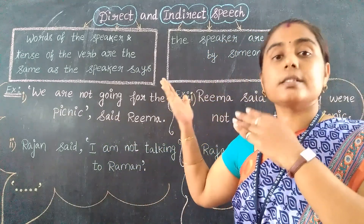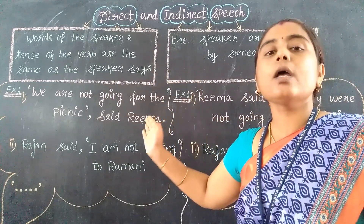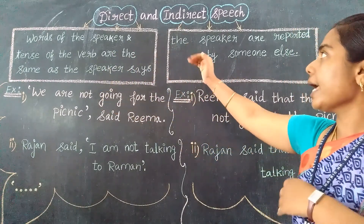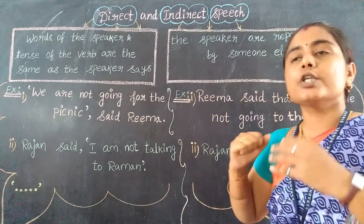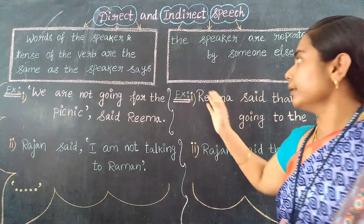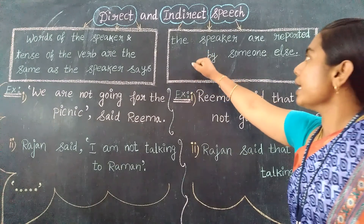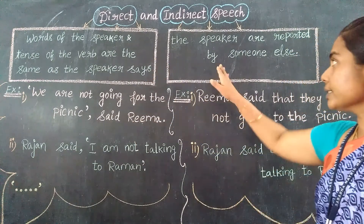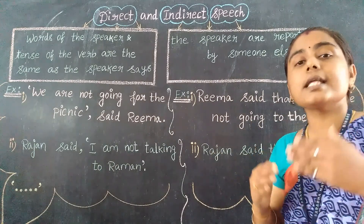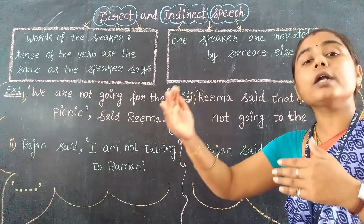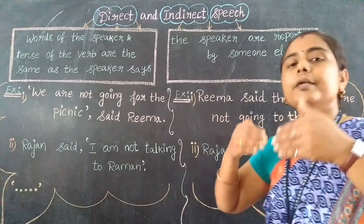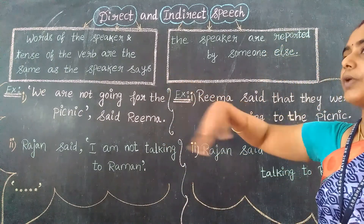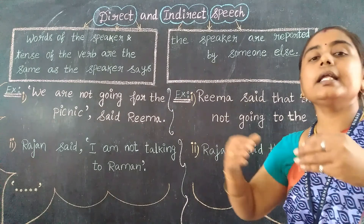Everything will perform what the speaker says. Now while talking about indirect speech, it is the opposite of direct speech. Everything will perform in an indirect process. The speech is reported by someone else — indirectly we are getting information, not directly from the speaker. In between, some mediator is used.